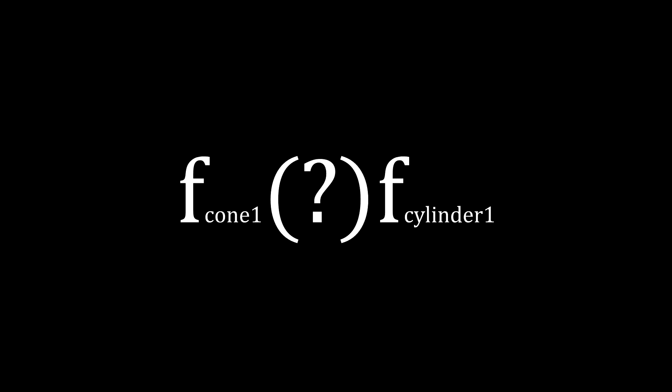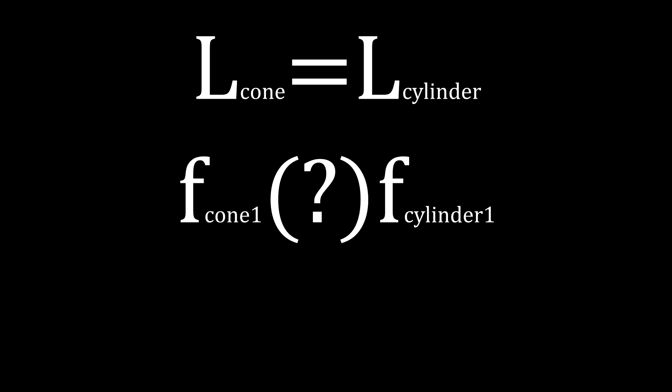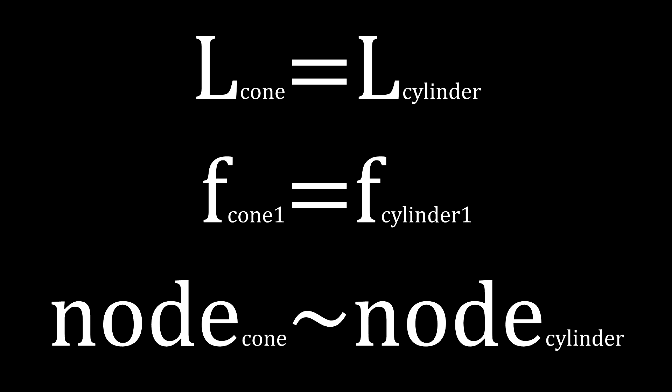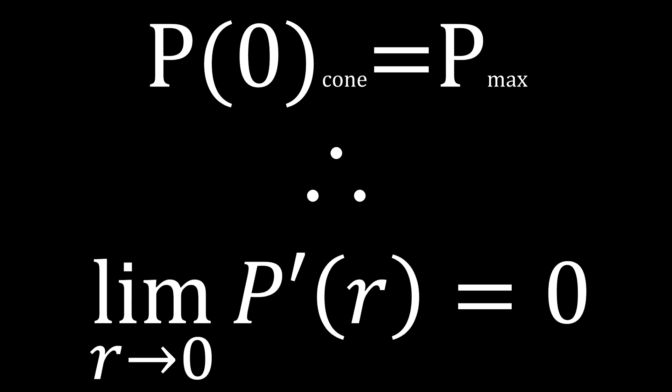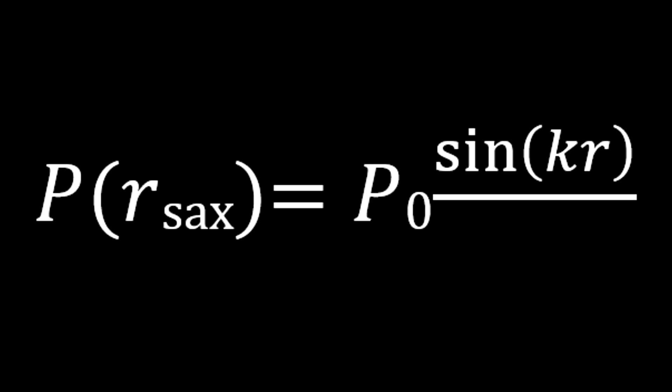The lowest fundamental frequency for a conical tube the same length as an open tube is actually going to be the same, meaning the nodes for both their equations are also the same, except at the closed end of a conical tube, where there is actually a moment of maximum pressure. From this, we can conclude that sine of kr has to be used in the equation.